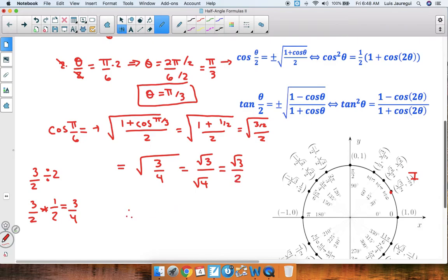So we can conclude, therefore, that cosine of pi over 6 is equal to the square root of 3 over 2.